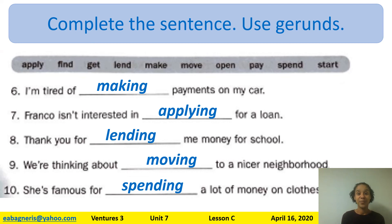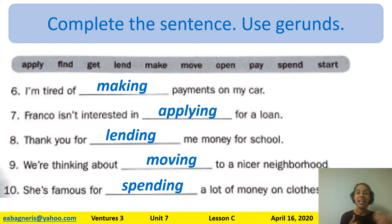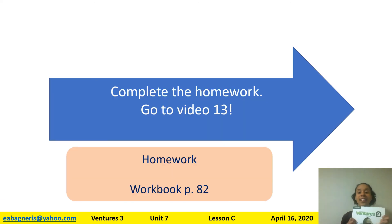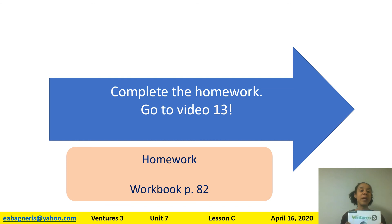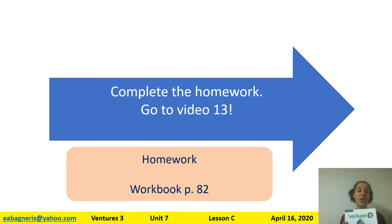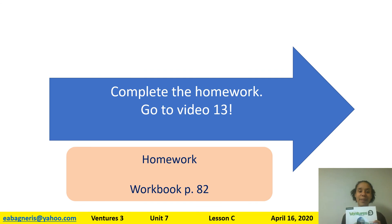So how did you do? Were those examples hard? You can go through and read them again — that's one of the great things about learning with a video, you can look at them again and say them aloud. Keep practicing. Now get out your workbooks — we are going to do page 82. We will go over that homework in the next video and continue practicing working with gerunds. I'll see you then, bye!